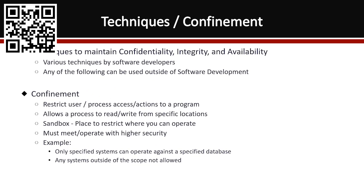The first technique is confinement. You need to restrict users, processes, and access to a program — limiting what can operate within it and what can connect. It will allow a process to read and write from specific locations, but with very specific requirements on what's allowed in and out. A sandbox is what you'll commonly hear — a place to restrict what you can operate and keep things contained. Anything bad that happens stays in the sandbox.